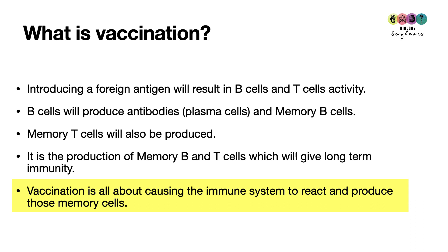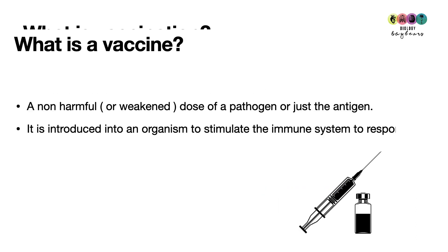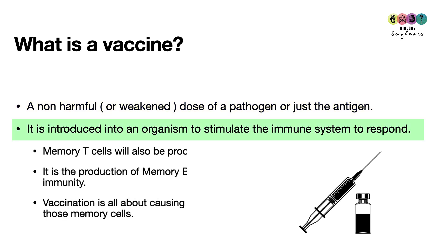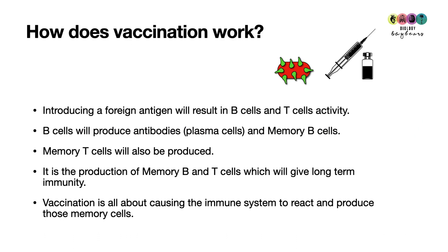So vaccination is all about causing the immune system to react and to produce those memory cells. If you're asked what a vaccine is: it's a non-harmful or weakened dose of a particular pathogen, or it could be just the antigen, and it's introduced into an organism to stimulate the immune system to respond.